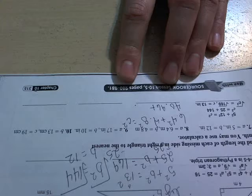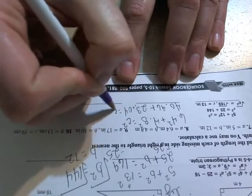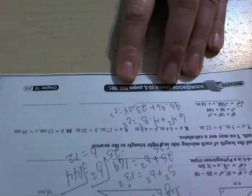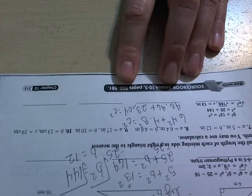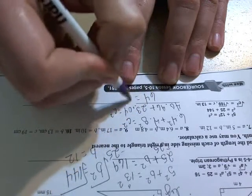4.8 squared, 4.8 times 4.8, is 23.04. When I add those two up, I end up with 64. C squared equals 64.